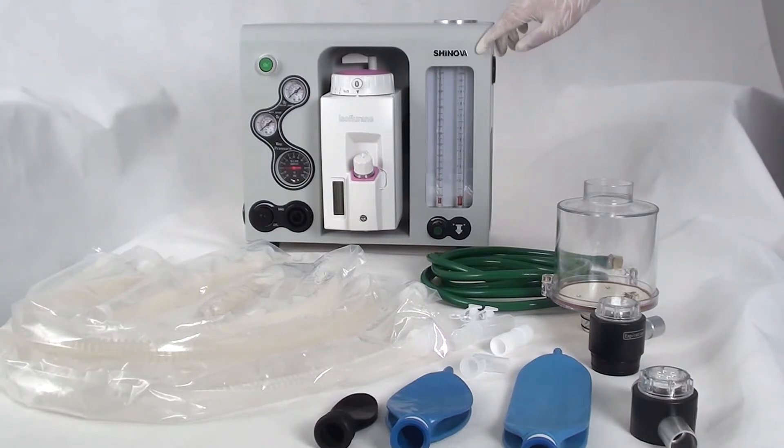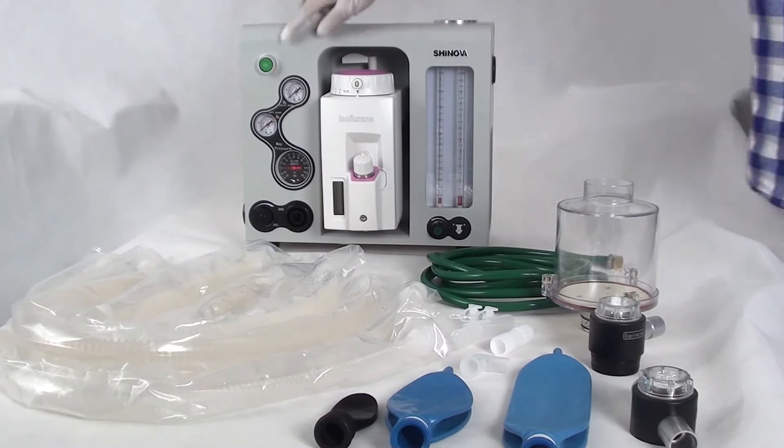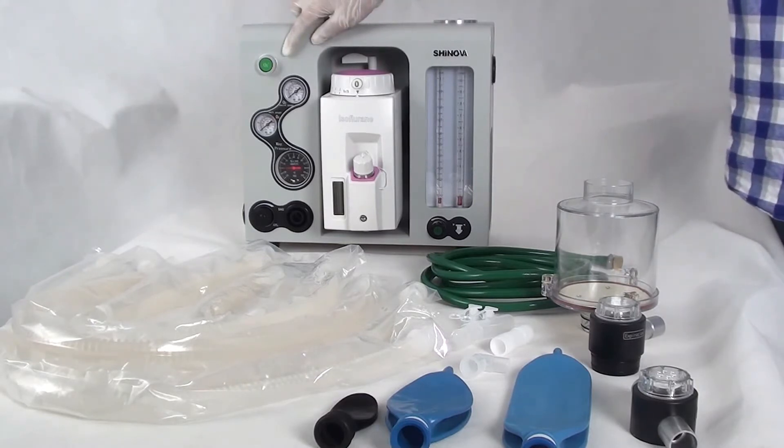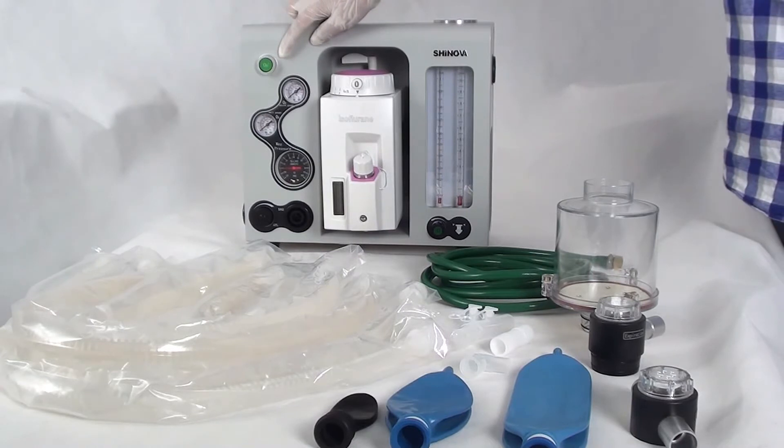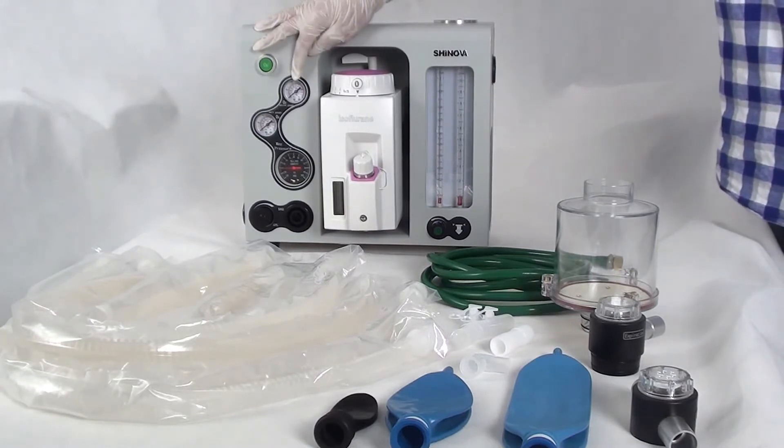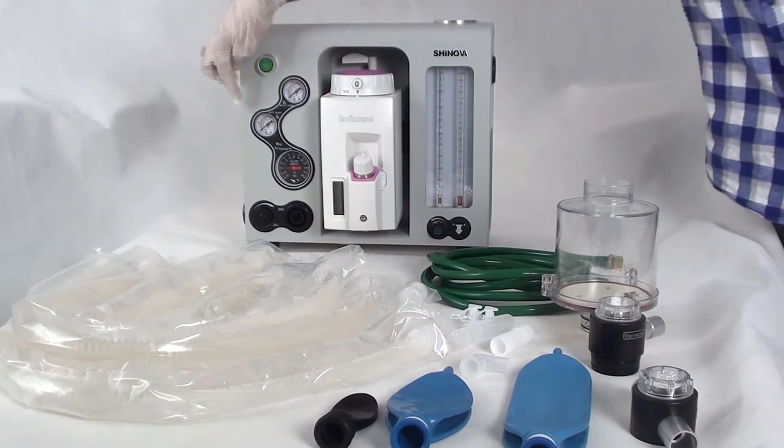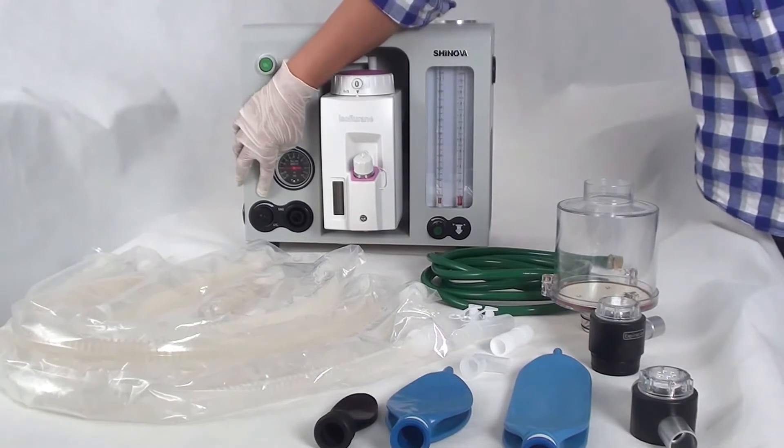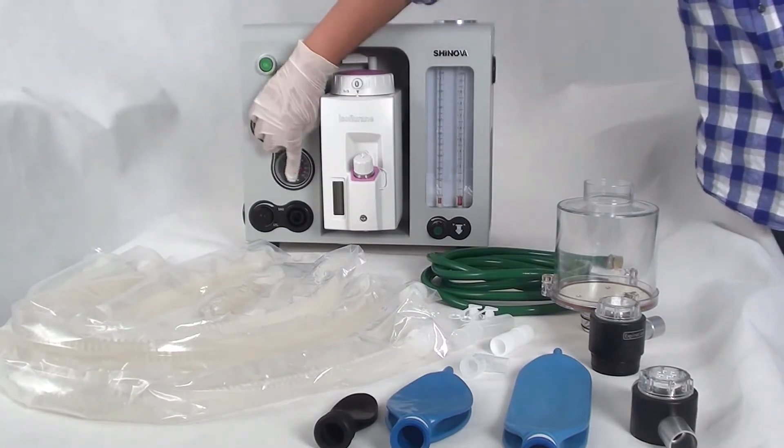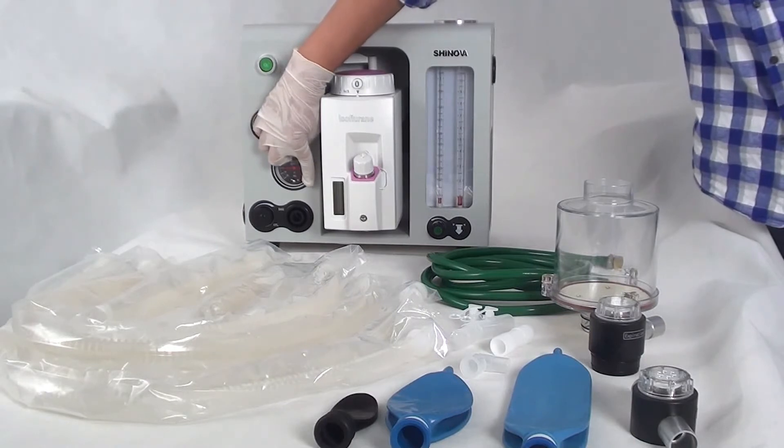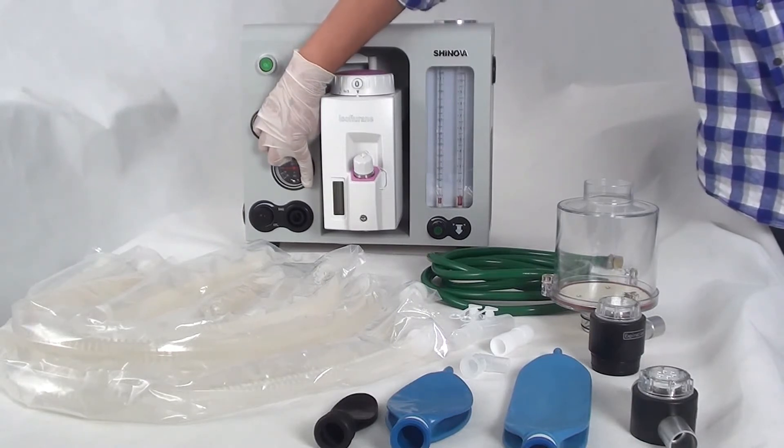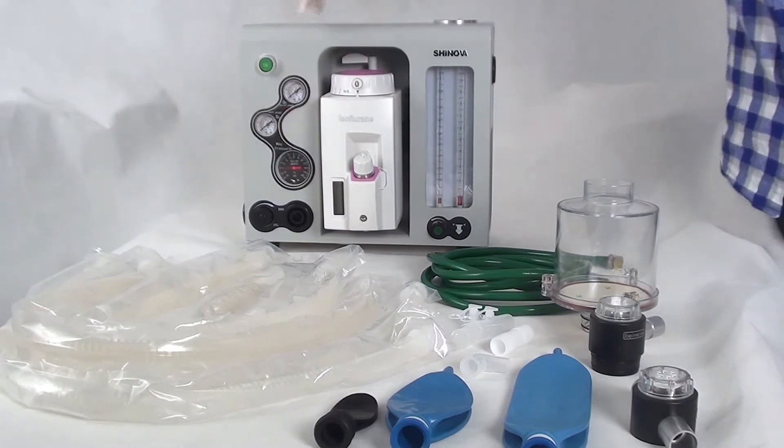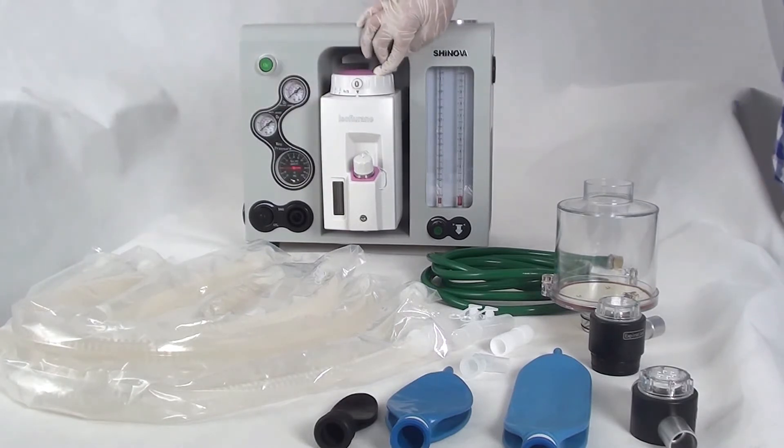First, let's see the green one. It's a fresh gas inlet. Then the source gauge, work gauge, and the weight pressure. This is a knob for APL. This is a bag for bag interface. And this machine has the isoflurane vaporizer.